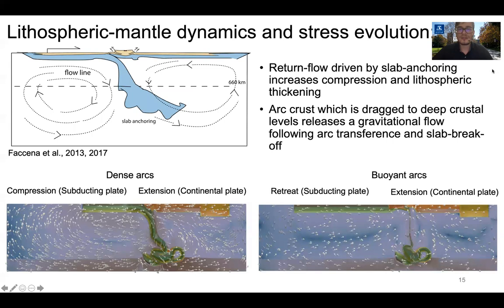Regarding the role of lithospheric mantle dynamics in stress evolution: previous research suggests that slab anchoring results in a return flow that increases compression and lithospheric thickening. When the arc crust is dragged to deep crustal levels, it releases a gravitational flow following both arc transference and slab break-off. In the case of dense arcs, this gravitational flow localizes compression towards the trench and the subducting plate and shifts the stress regime in the continental plate to extension. In buoyant arcs, it drives retreat of the subducting plate and the overriding plate, accompanied by lithospheric extension.